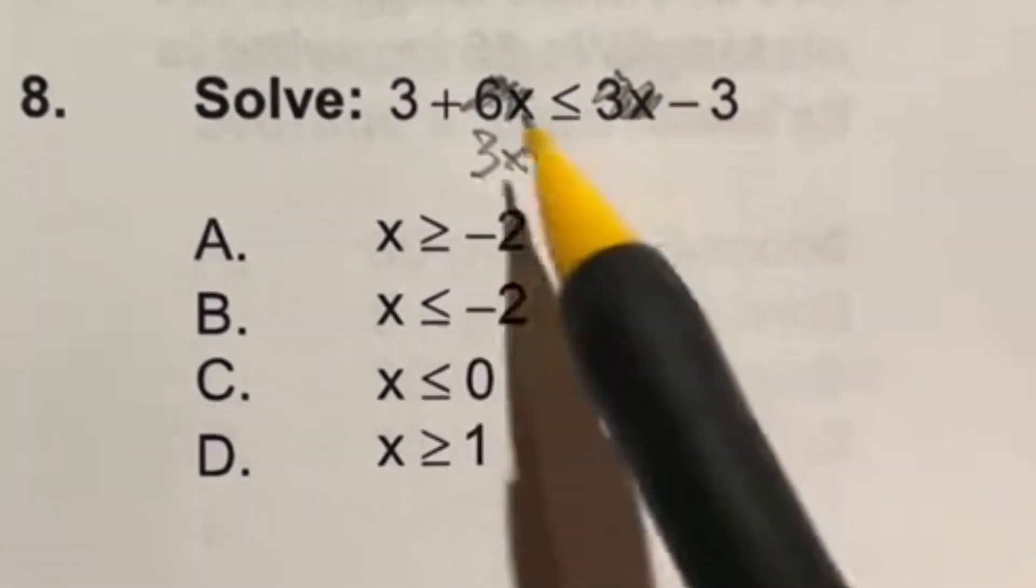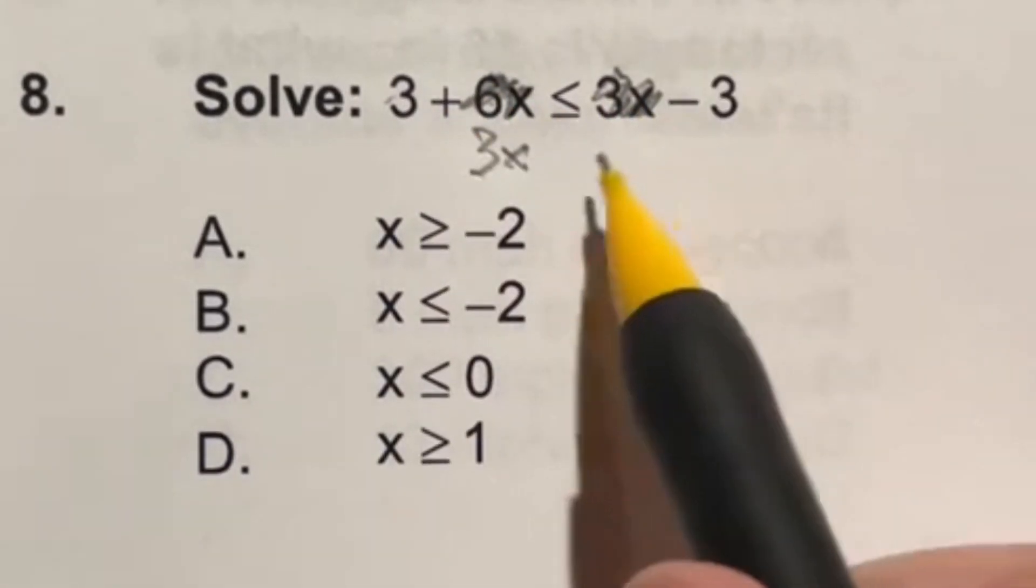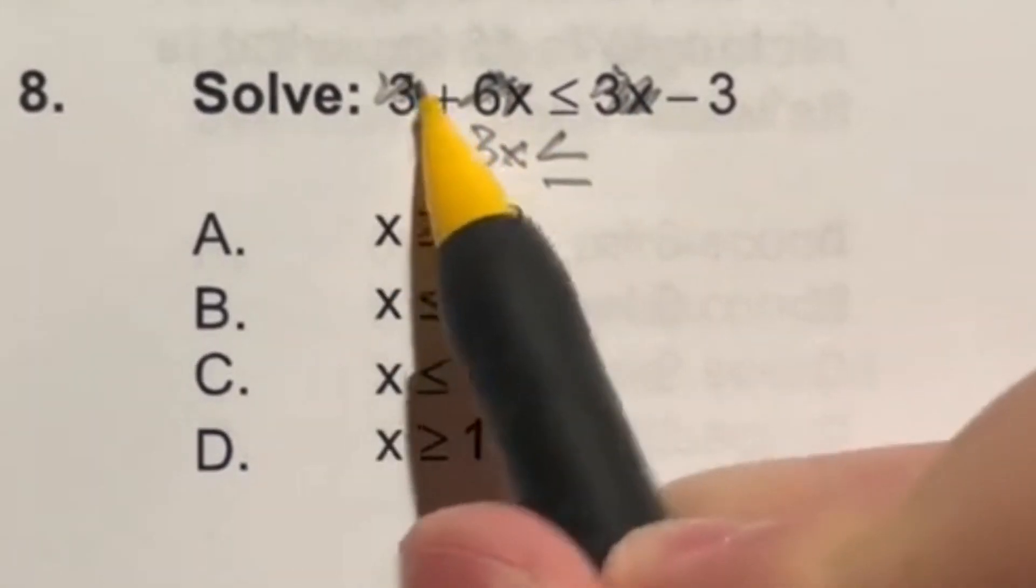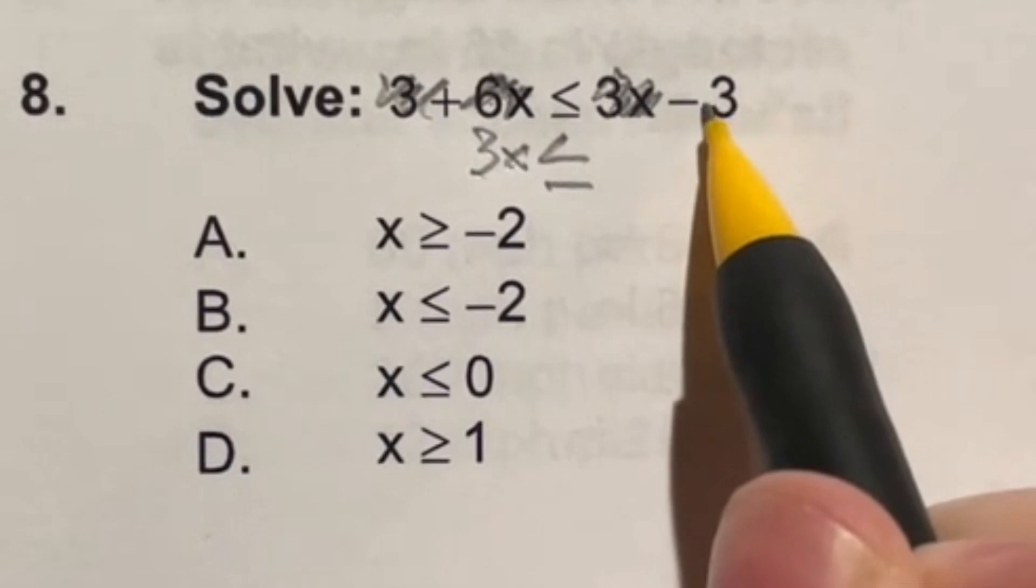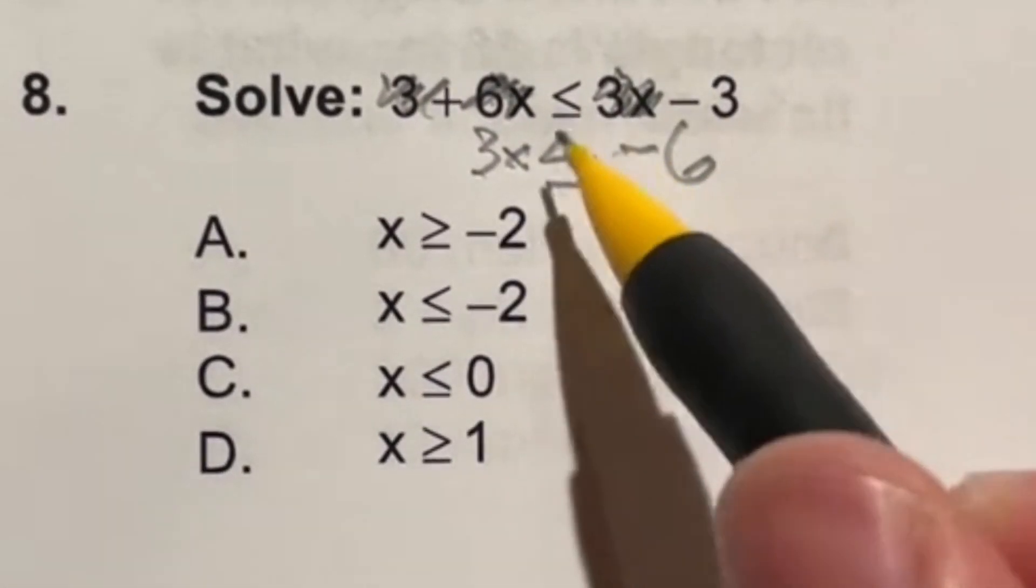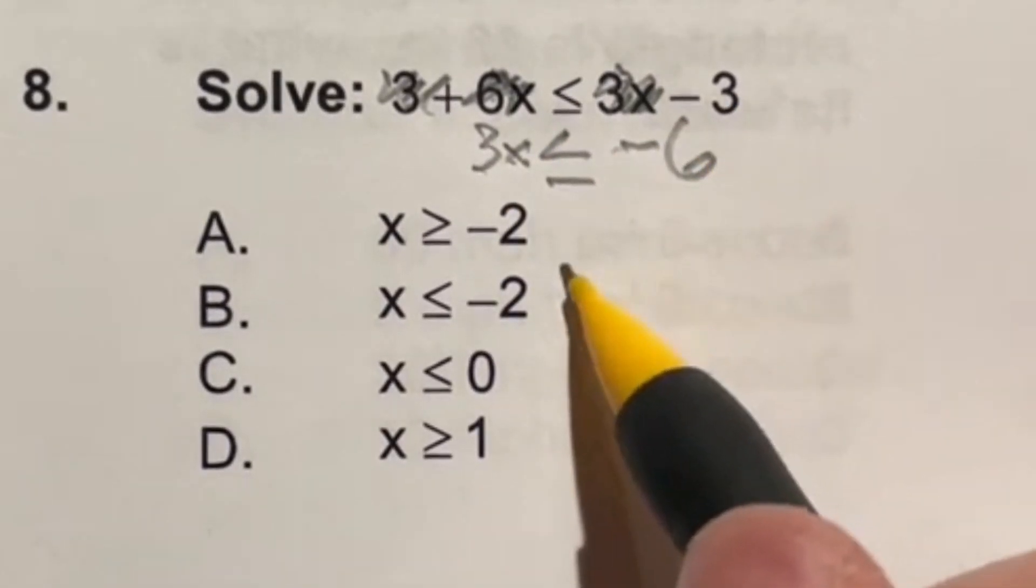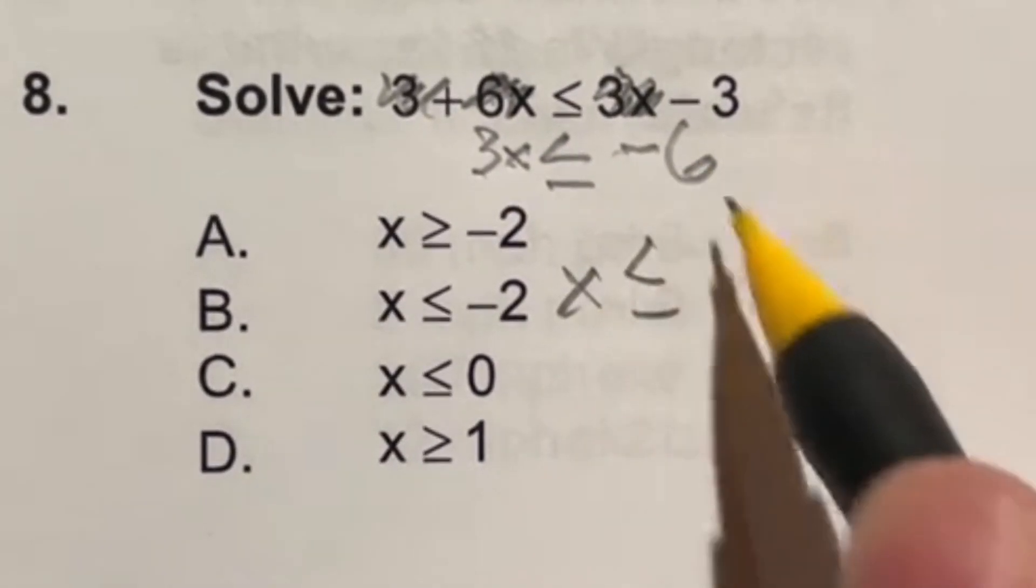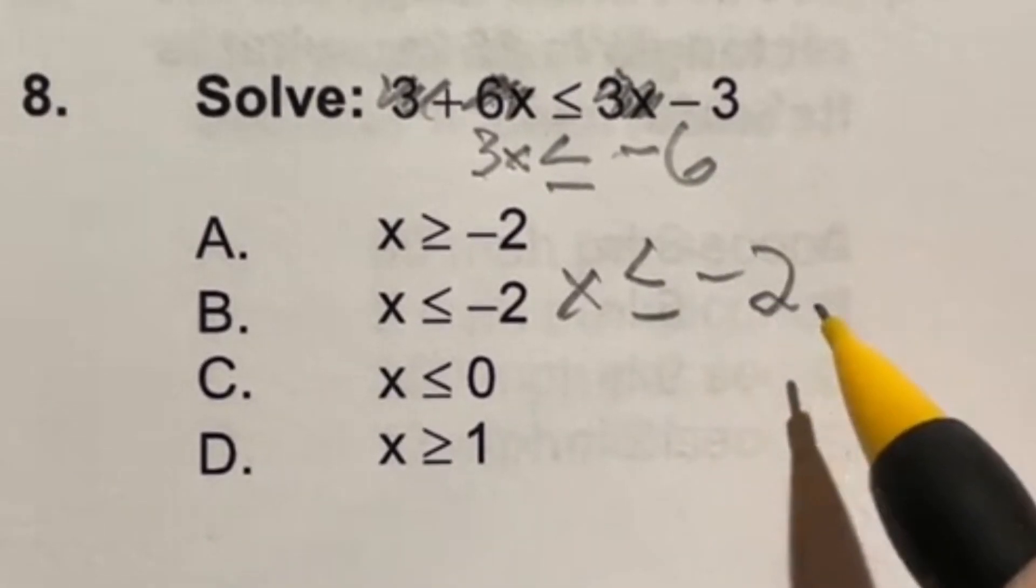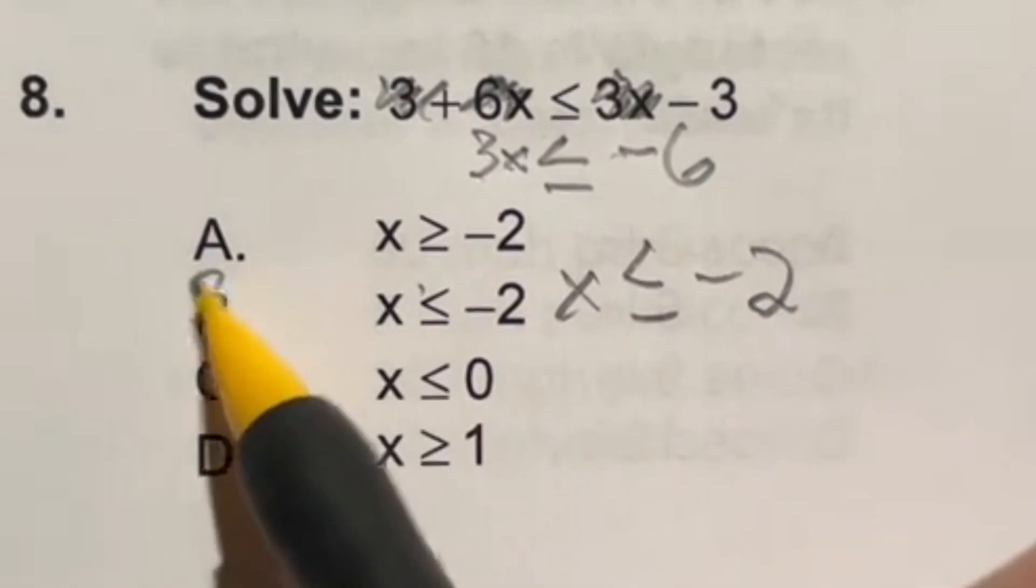Now I also want to get rid of the 3 on this side over here. So we're going to subtract 3 from both sides, giving me nothing left over here. And then we'll have negative 3 minus 3 for a negative 6 over here. Our last step is going to be divide both sides by that 3. And that's going to give us that x is less than or equal to negative 2. Now looking through here, the equivalent to that would be this guy right here. So our answer is B.